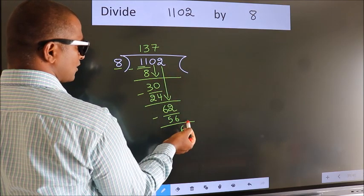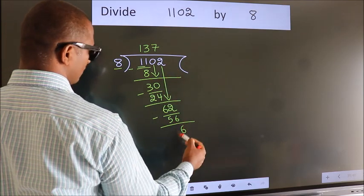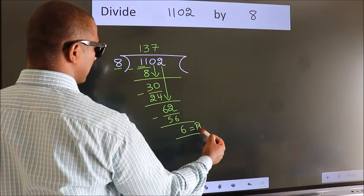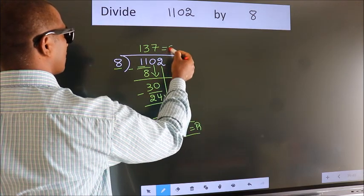No more numbers to bring it down. So we stop here. This is our remainder. This is our quotient.